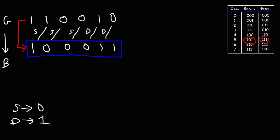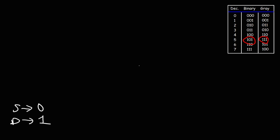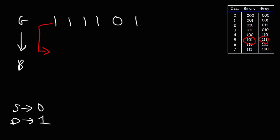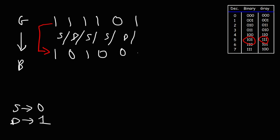For more practice, given gray code 11110101, convert it to binary. Rewrite the MSB: 1. Comparing adjacent pairs: 1 and 1 are the same, so 0. 1 and 0 are different, so 1. 1 and 1 are the same, so 0. 0 and 0 are the same, so 0. 0 and 1 are different, so 1. So gray code 111101 corresponds to binary 101001.